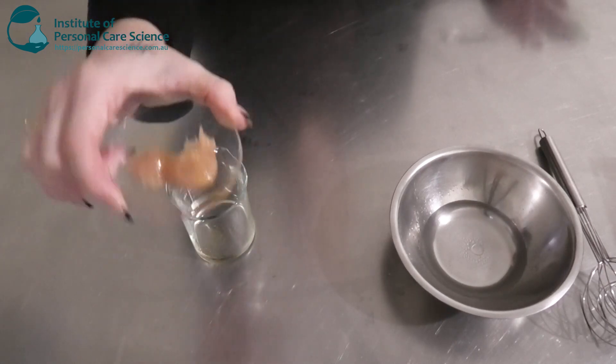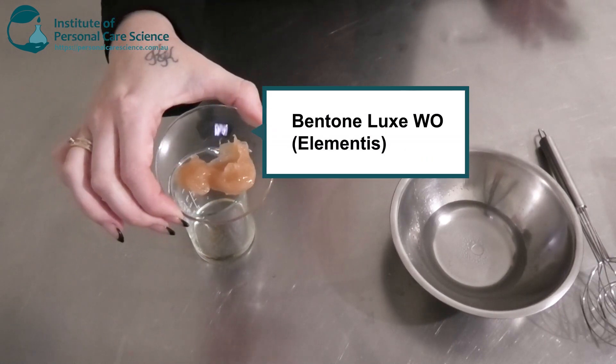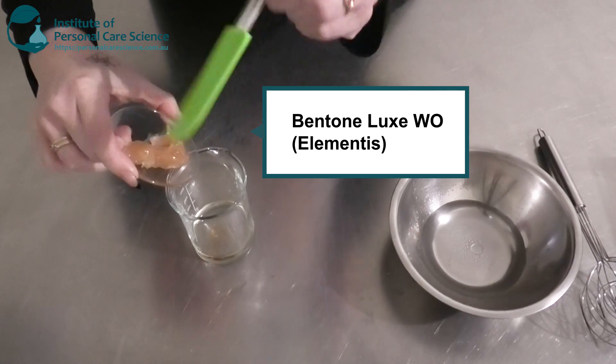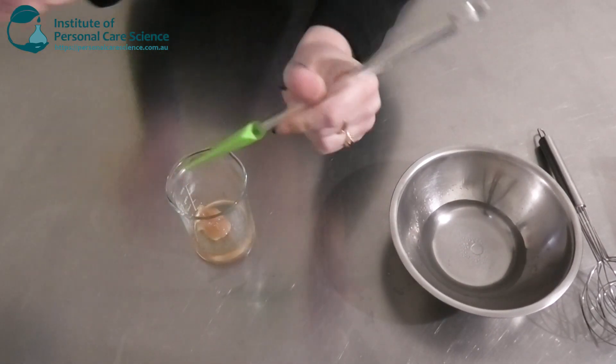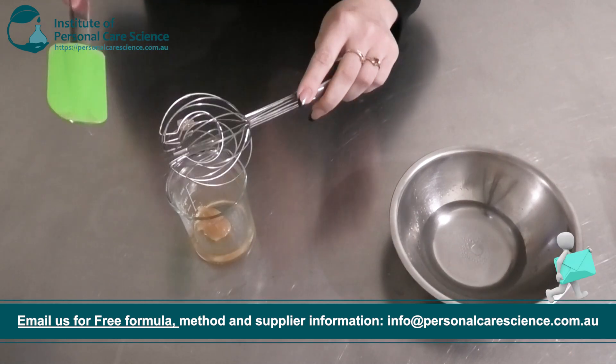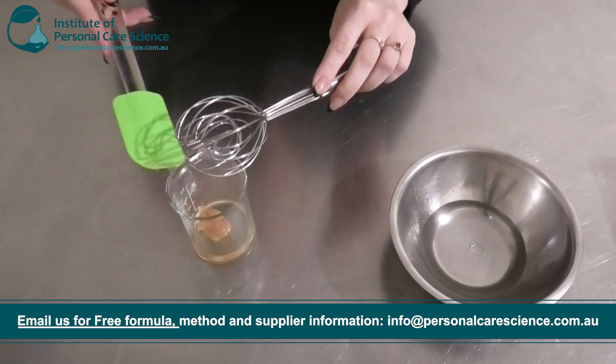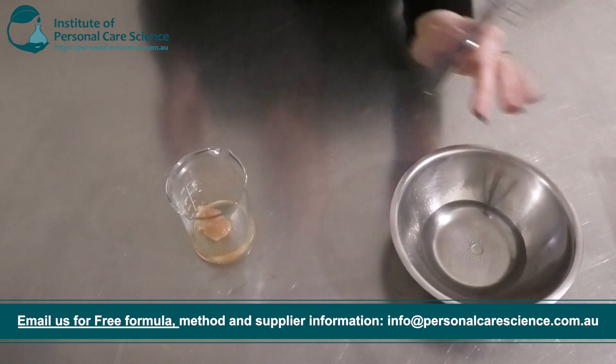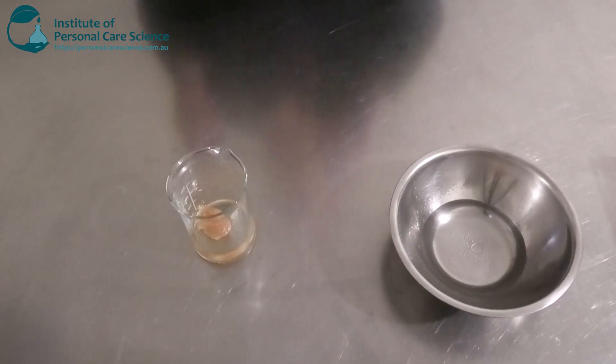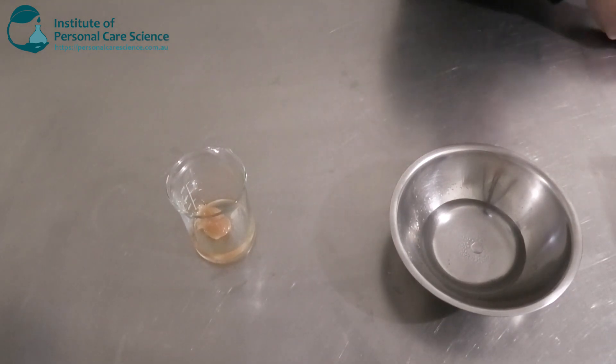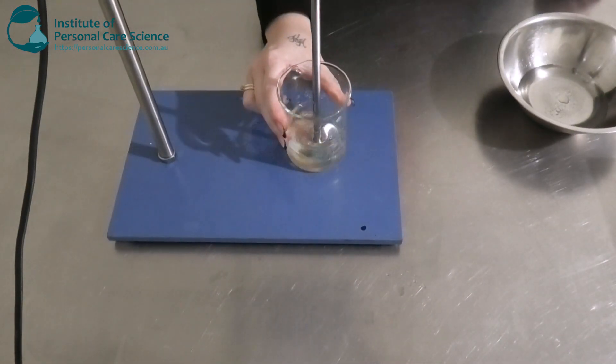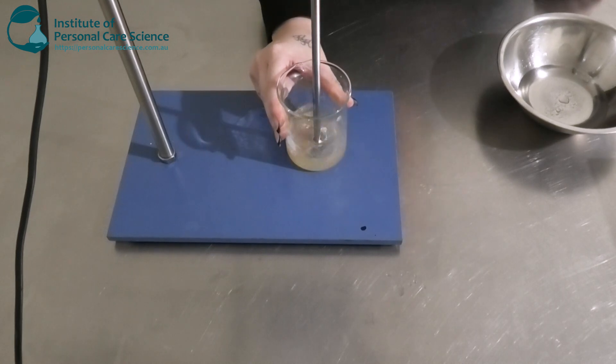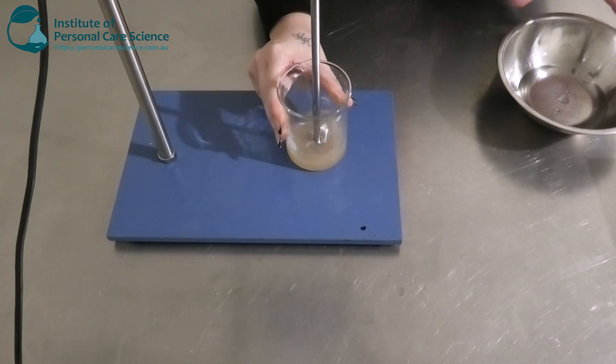And then last thing I'm going to add my polymeric emulsifier here. So this is the Bentone Luxe. So I'm going to add that into my oil phase. Now you will need to add about medium shear to this to create the emulsion. And you will need to add your water phase slowly to this as well. That's per supplier recommendations. So I'm going to use my propellant mixer here. Okay, so I'm just going to start mixing that one. Just get that Bentone Luxe homogenous in my oil phase. And then I'm just going to start slowly adding my water phase to it.